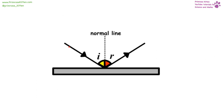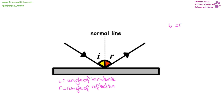When a wave is reflected, it comes in, meets the boundary, and is then reflected off. Our angle of incidence is always going to be equal to our angle of reflection, so we can say that I equals R. The normal line is in the middle — it is a dashed line drawn at 90 degrees to the mirror or surface that the wave is being reflected off. If we have a sound wave instead of a light wave being reflected, we are going to get an echo.